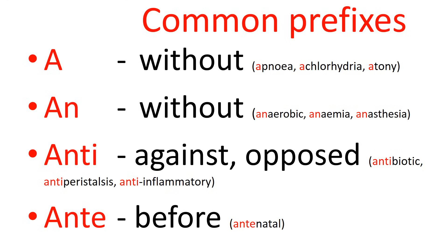Or there could be a uterine atony — loss of tone in the uterine musculature after childbirth. Normally it's the contraction of the uterine muscle which compresses the vessels and reduces blood flow. So if there's uterine atony after childbirth, there can be more bleeding because the bleeding vessels are not clamped down on. So 'a' in front of a word simply means without.